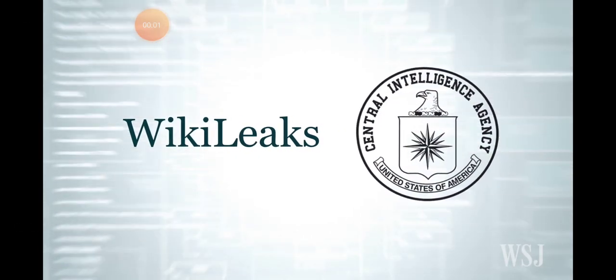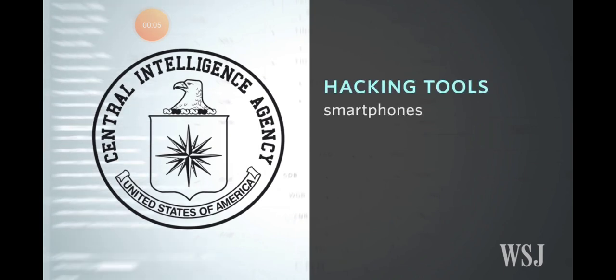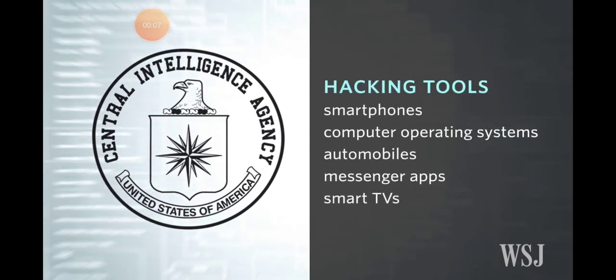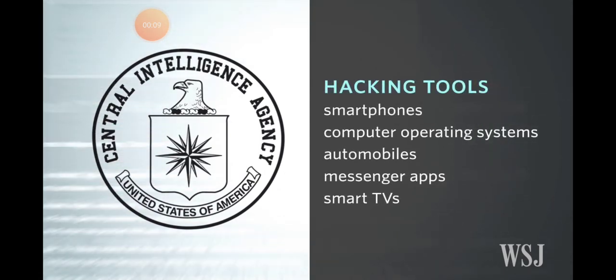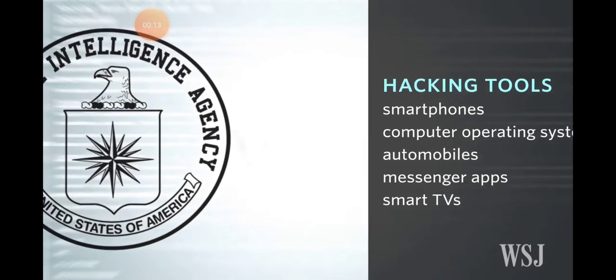WikiLeaks has released a trove of documents and files that it says expose hacking tools used by the Central Intelligence Agency. The leaks purportedly show that the CIA is capable of hacking smartphones, computer operating systems, automobiles, messenger applications, and even internet-connected televisions.